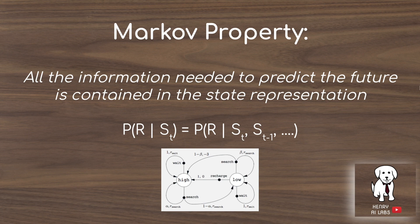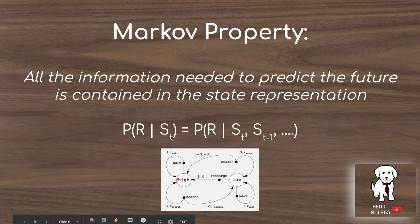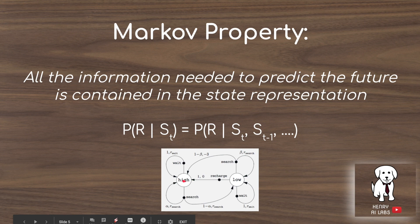A key component of the Markov decision process is the Markov property, which says that all the information needed to predict the future is contained in the current state representation. Using conditional probabilities, we can summarize it as: the probability of the reward given the current state equals the probability of the reward given the current state, all previous states, and all prior history. In the recycling robot example, it doesn't matter whether the robot just came from high, just recharged from low, or just waited — all that matters is the current state.